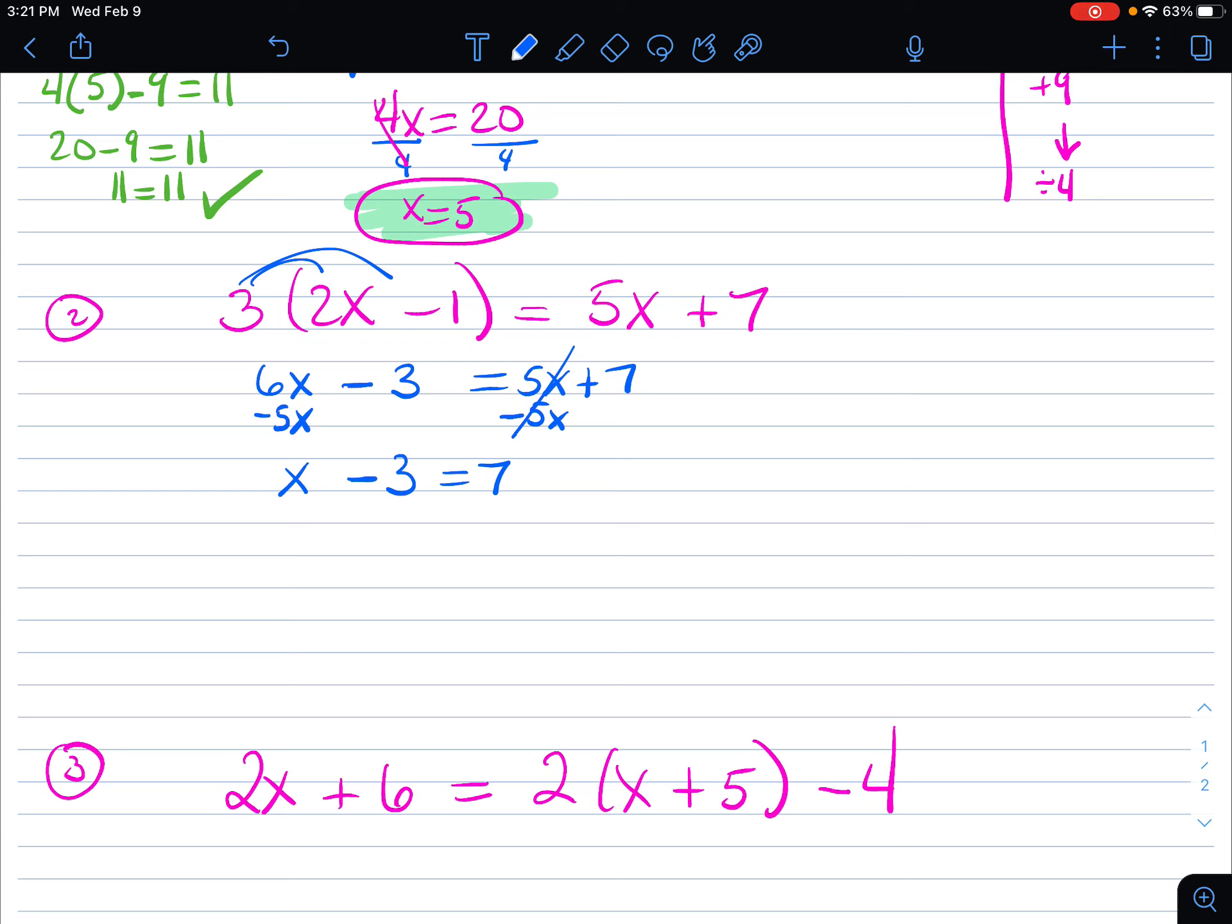6x take away 5x is 1x minus 3 equals 7. And now I just have one step to isolate the x. What was done to x is this subtracting 3. How do I undo that? I add 3 to both sides. And x is equal to 10. That's my solution.